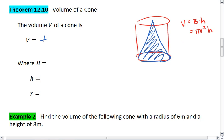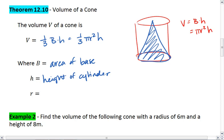The volume of a cone is V equals one-third base times height or one-third pi r squared h, where B is the area of the base, h is the height of the cylinder, and r is the radius of the base.